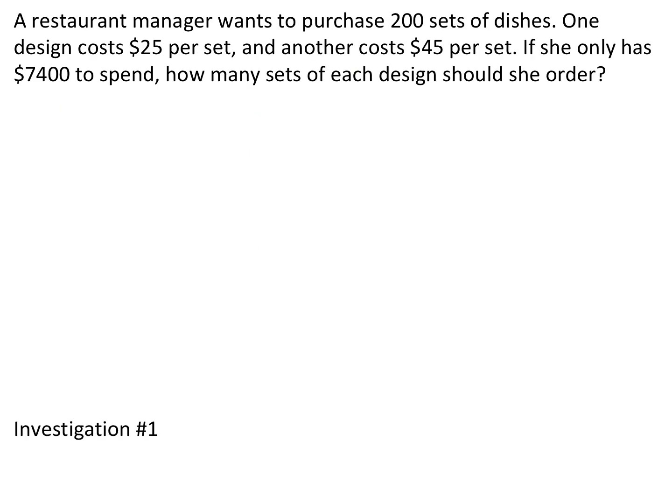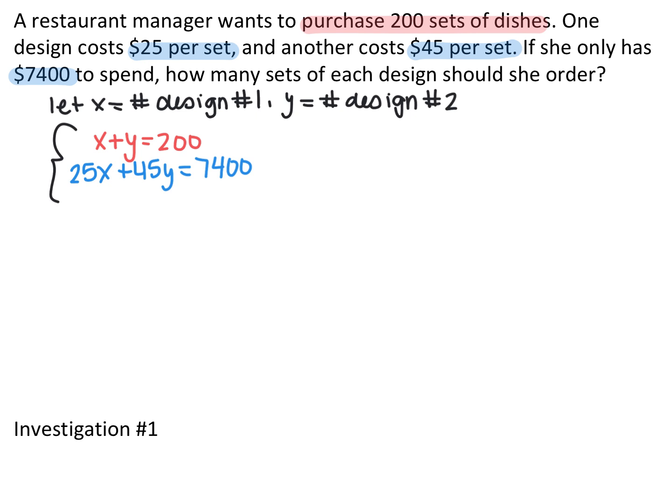A restaurant manager wants to purchase 200 sets of dishes. One design costs $25 per set and another costs $45 per set. If she only has $7,400 to spend, how many sets of each design should she order? The two equations I've set up are x plus y equals 200 and 25x plus 45y equals 7,400, where x is the number of the first design and y is the number of the second design.